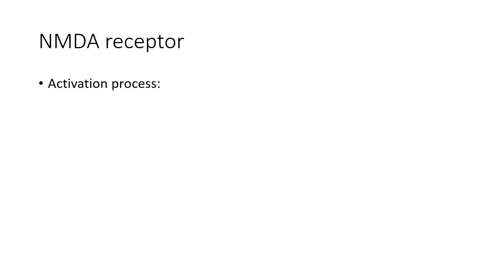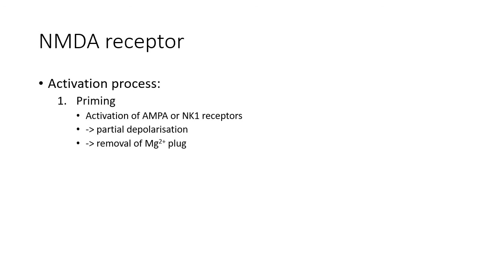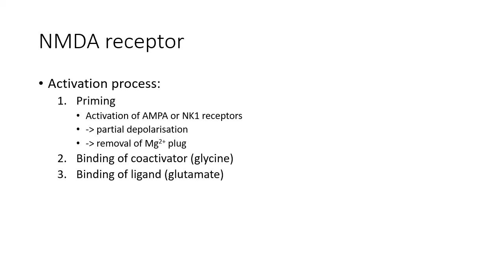Now let's discuss the NMDA receptor. How is this receptor activated? Isn't it a glutamate receptor? The answer is, it takes a bunch of factors. First, the receptor must be primed, resulting in partial depolarisation and removal of the magnesium plug. Next, the receptor must be bound by the coactivating neurotransmitter glycine. Only then may the receptor be activated by its endogenous ligand glutamate.